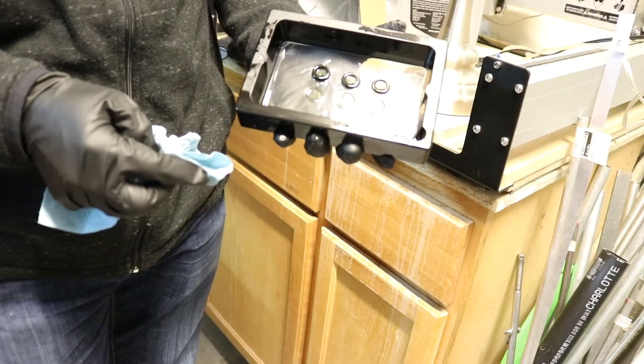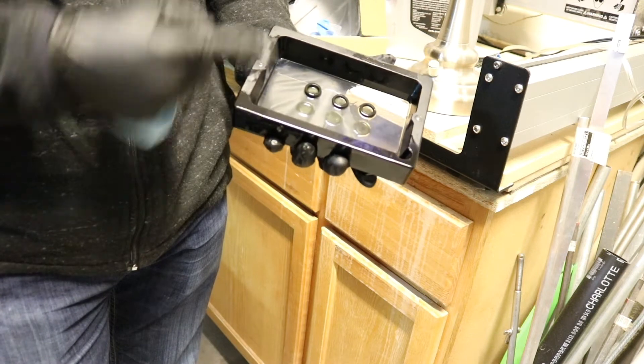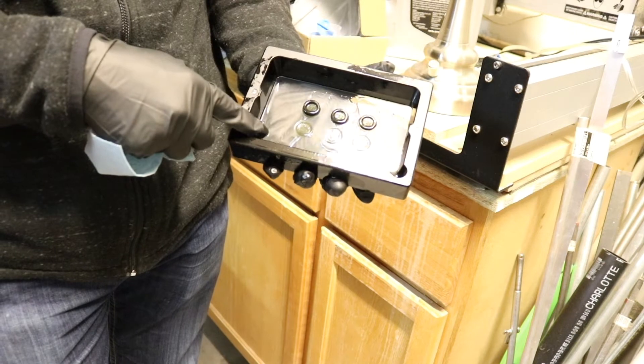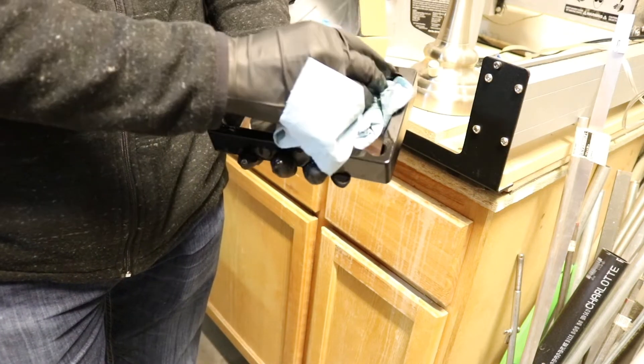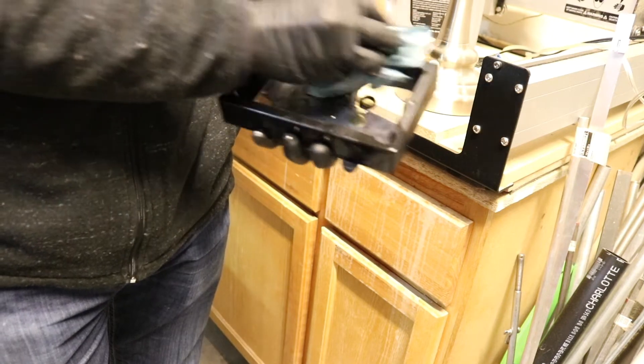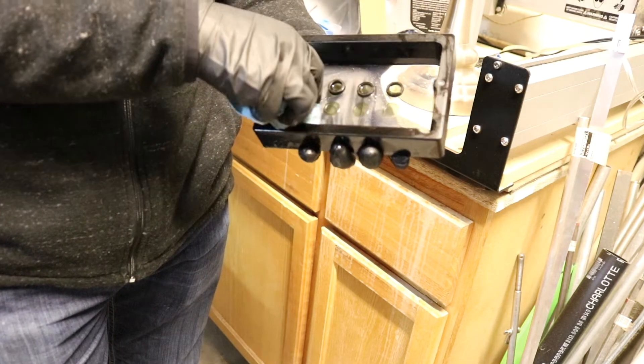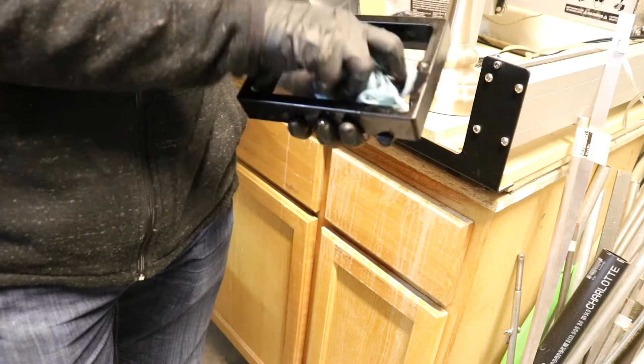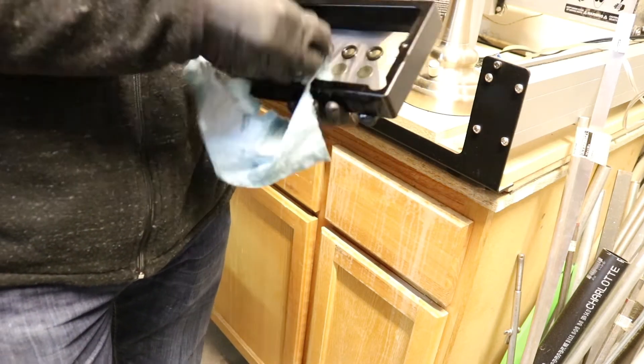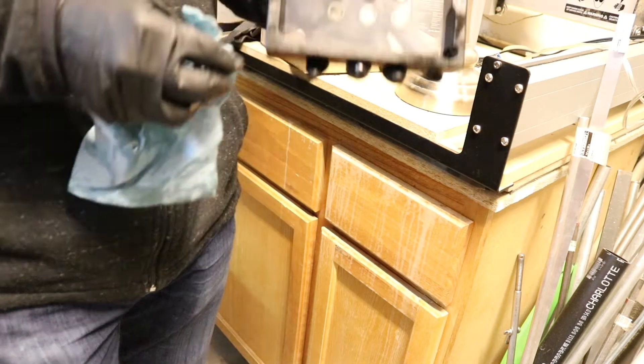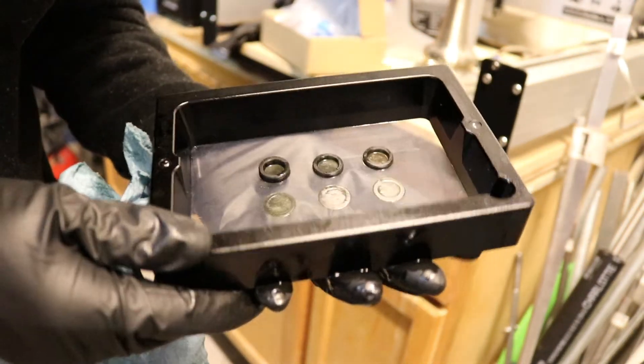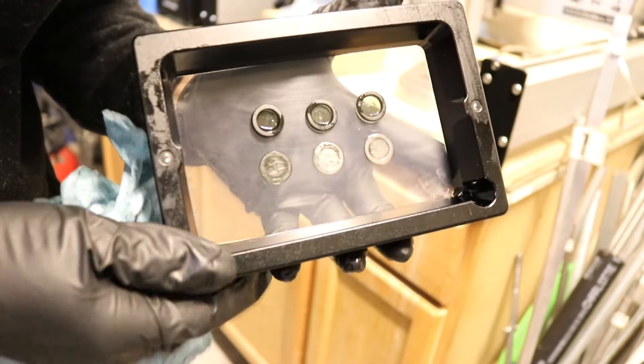All right. So, I've dumped out the extra resin back into the bottle through that filter and then now I've poured in a little bit of rubbing alcohol. I'm going to clean it out as much as possible. I don't want any excess resin left in my vat. Okay, so you can see that we have six rings on there, varying thickness.